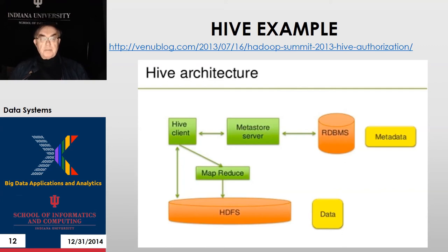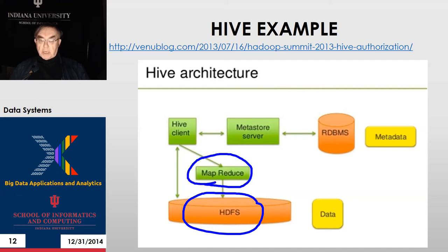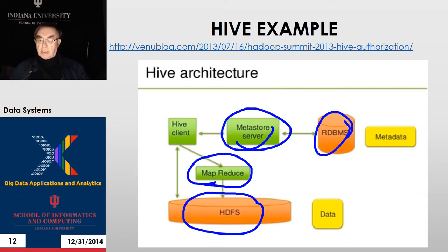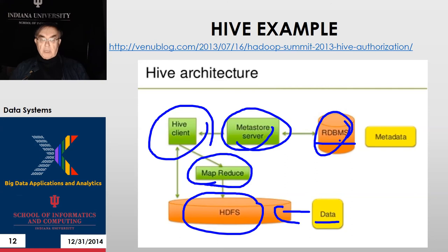Here is how Hive is architected. We have HDFS for the data, which is used by Hive, and we have MapReduce. We have the Metastore, which stores the metadata in a classic relational database, but the data itself — which is much the largest in bytes — is stored in HDFS to get scalability. And here's your Hive client supporting almost classic SQL queries.